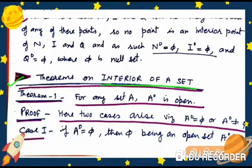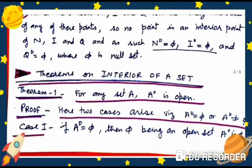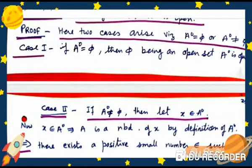Theorem 1: For any set A, A° is open — that is, the interior of A is an open set. Proof: Two cases arise. Case 1: If A° = φ, then since φ is an open set, A° is open — the interior of A is open.